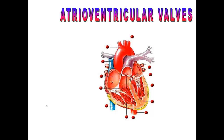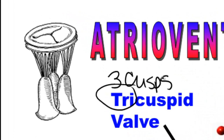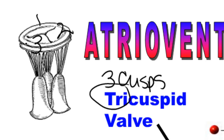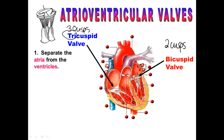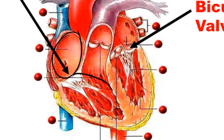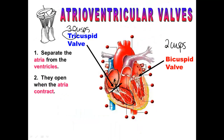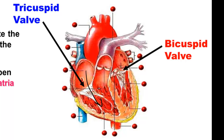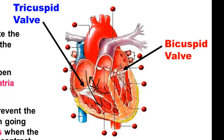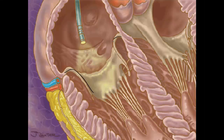Next we'll talk about the atrioventricular valves, also known as the AV valves. On the right side of the heart we call this the tricuspid valve, because it has three cusps. The AV valve on the left side is called the bicuspid valve because it has only two cusps. The job of the AV valves is to separate the atria from the ventricles. When the atria contract, the AV valves open and blood gets pressed from the atria into the ventricle. When the ventricle contracts, that valve closes so the blood can't go backwards.